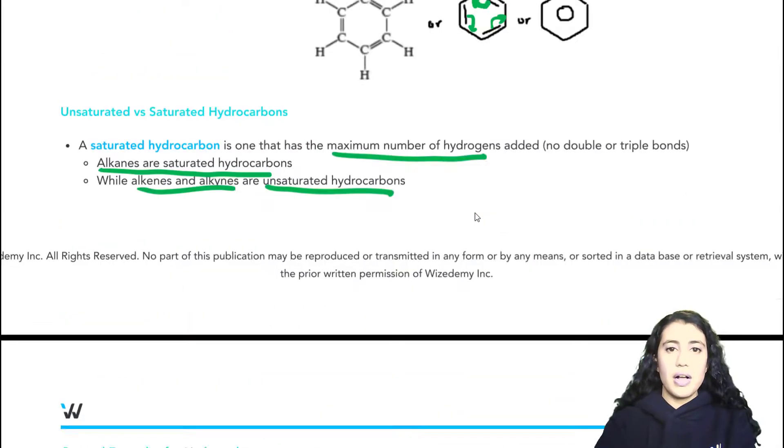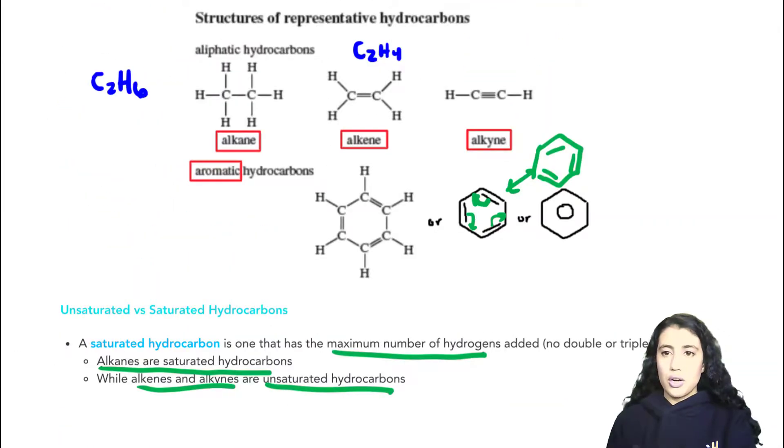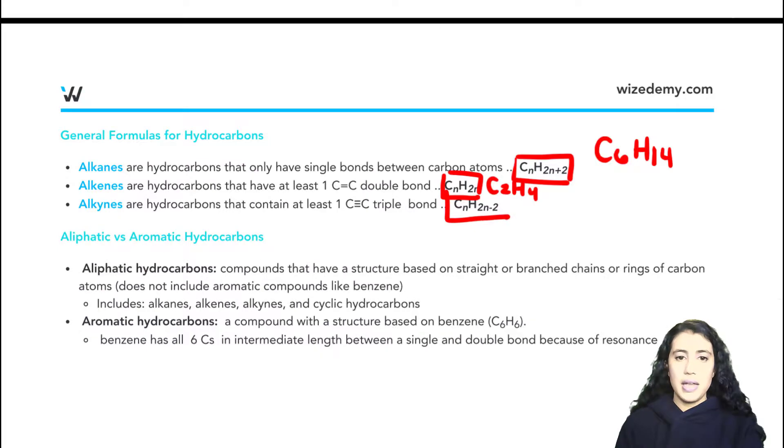And finally, for an alkyne, we have 2 carbons as well, and here we only have 2 hydrogens. So the formula is CnH2N-2. So for us, we had 2 carbons, so if we multiply 2 by 2, you'll get 4, and subtract 2, you get 2.